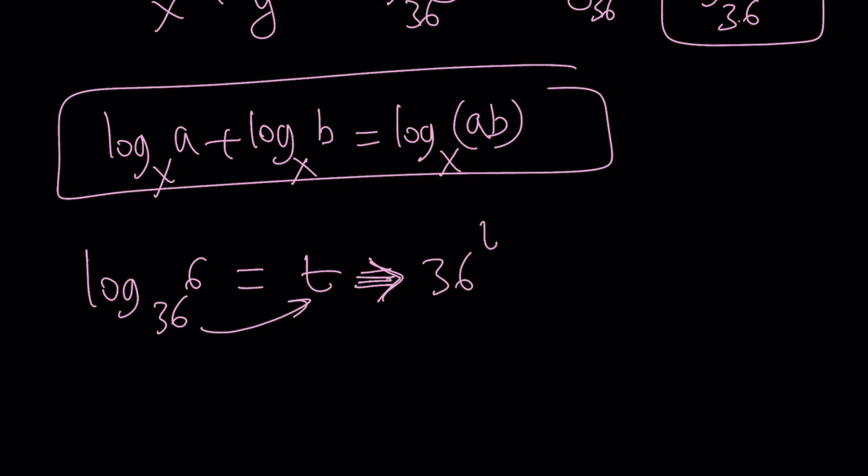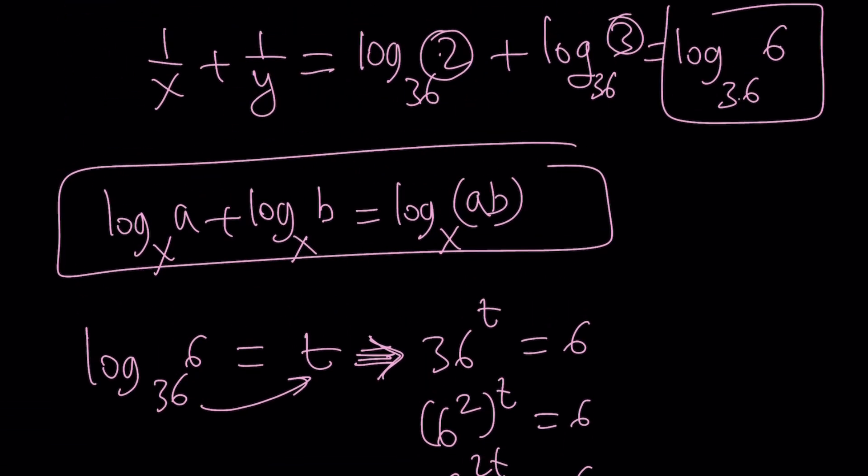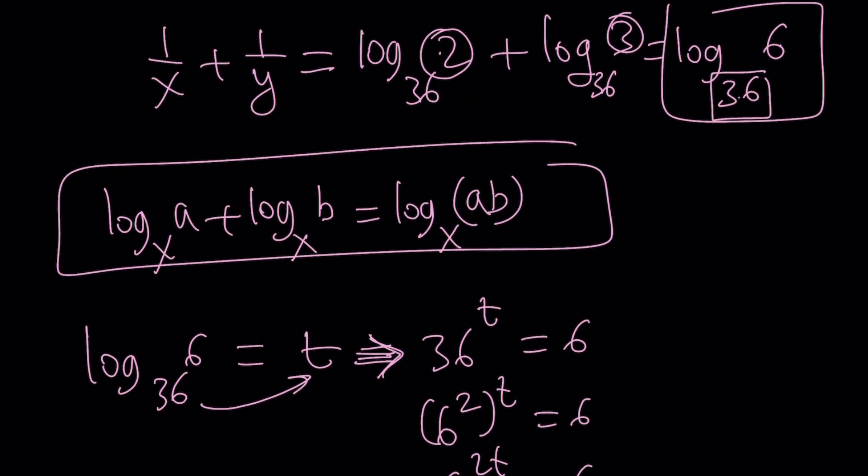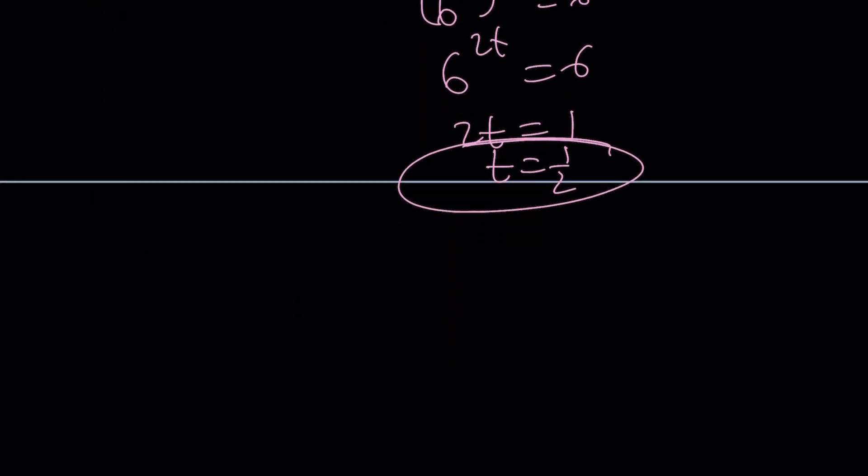So by using definition, this is going to become 36 to the power t equals 6. Oh, 36 is 6 squared, isn't it? Okay, then this becomes 6 to the power 2t equals 6. 2t equals 1, and t equals 1 half. Okay, you could also think about this. It's a lot easier to think about it this way. 36 to the power of what number is 6? It is 1 half, because 1 half power means square root. So the square root of 36 is 6. In other words, if you see a number here and its square root, the answer is always 1 half. Isn't that cool? Okay, so 1 half is the answer. That brings us to the end of the first method.